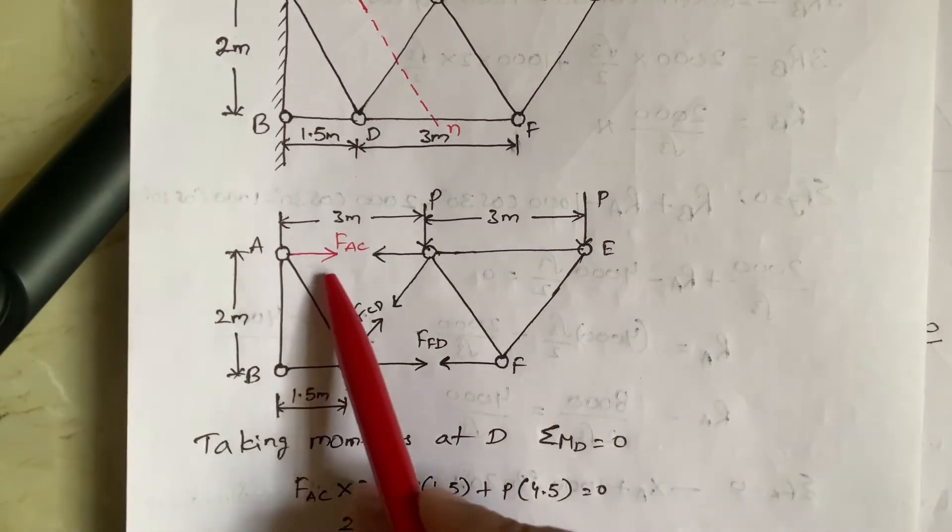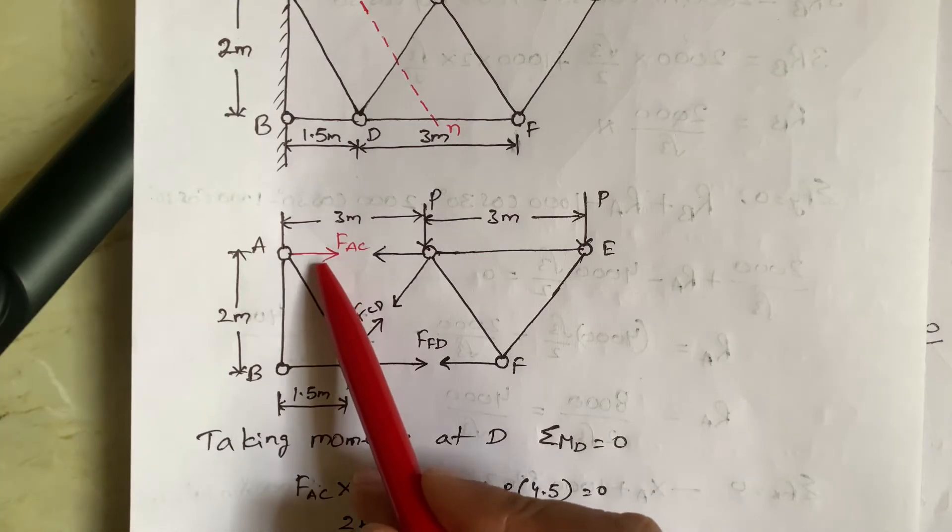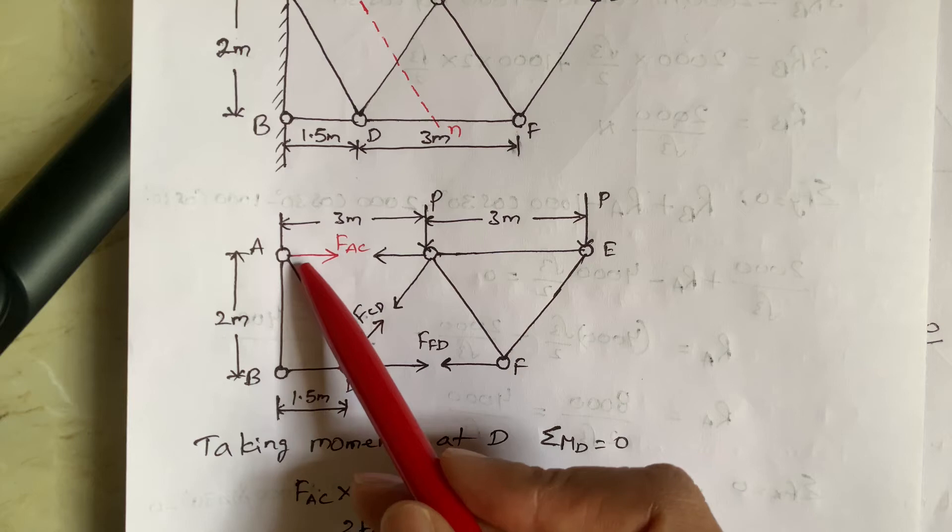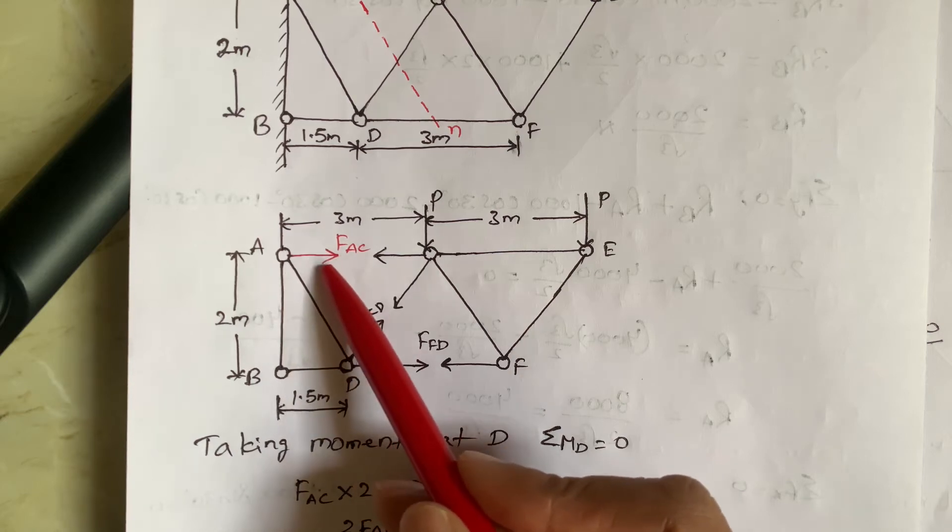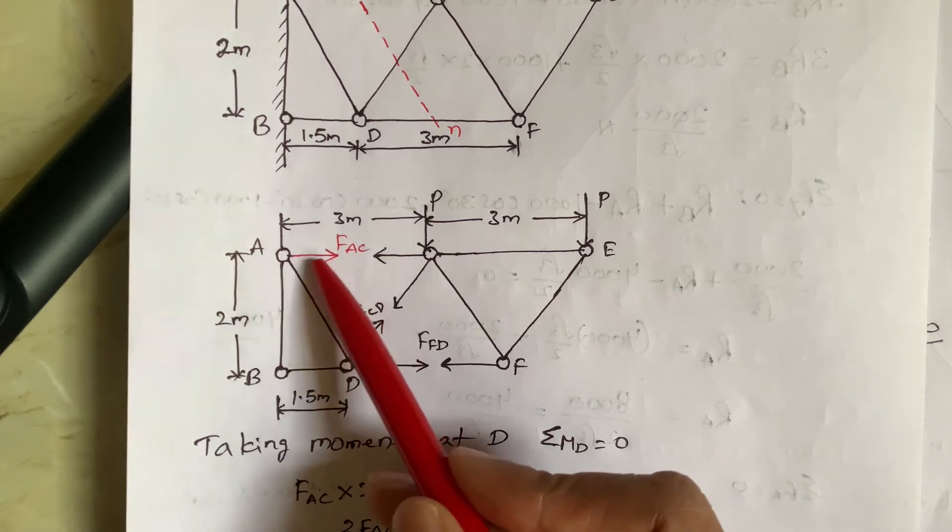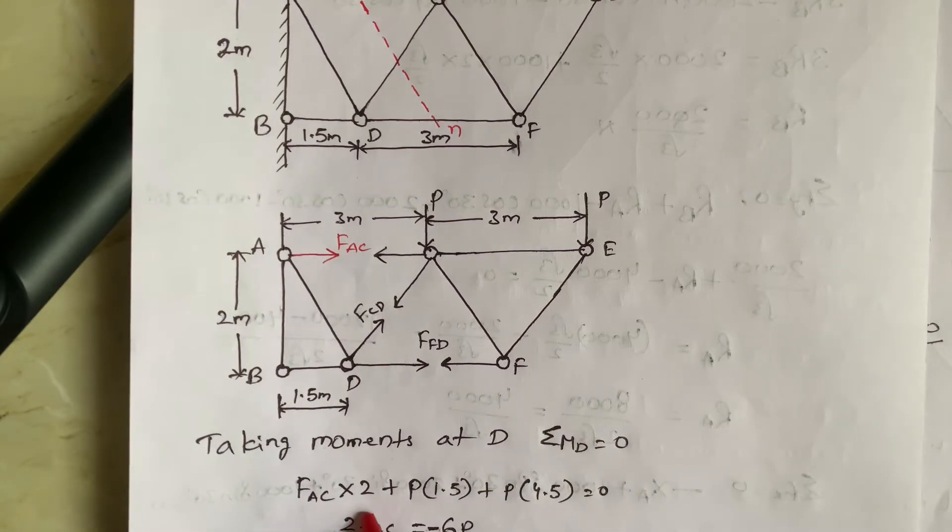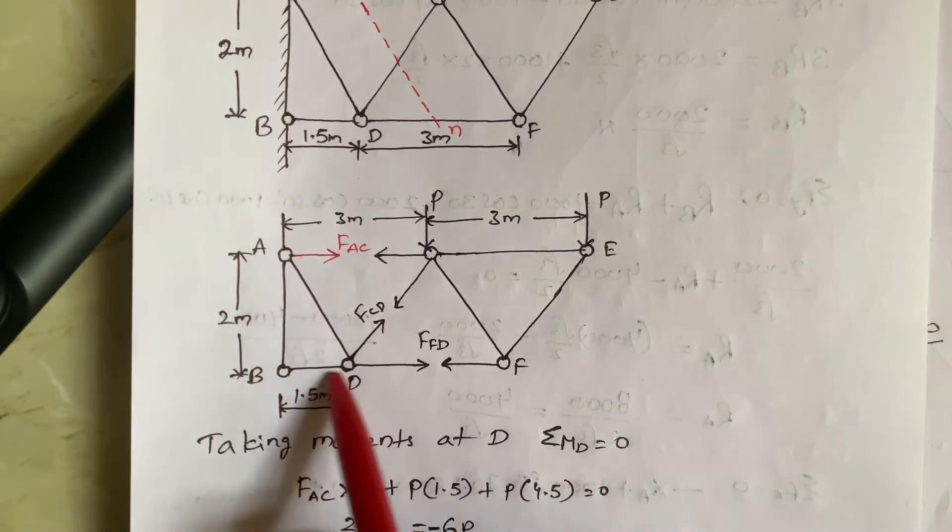So here, FAC force in the member AC, FAC into perpendicular distance. The moment formula is force into perpendicular distance. So FAC into perpendicular distance is 2 meters. So FAC into 2 which is clockwise direction.